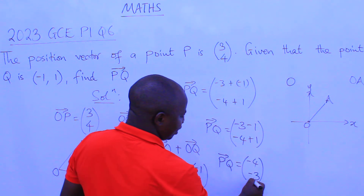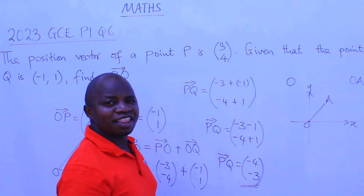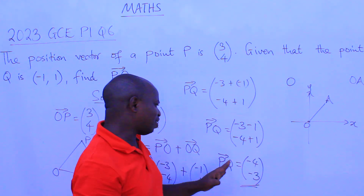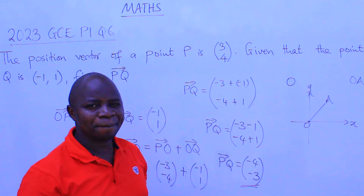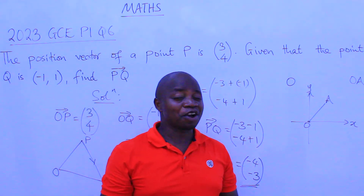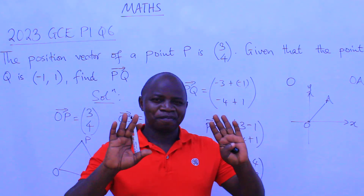So ladies and gentlemen, the final answer is: the vector PQ equals (-4, -3). This is the correct answer. I hope this is clear. Bye-bye.